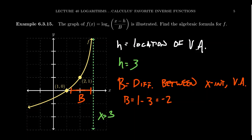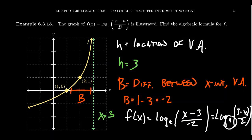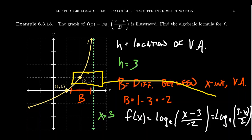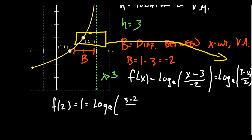So what we know about our function so far is: f of x equals log base a of (x minus 3) over negative 2. We don't know the base yet. Having a negative inside a logarithm is not actually wrong, but we can rewrite this as log base a of (3 minus x) over 2. Now we need to figure out the base a, and that's where we use the point (2, 1) that we haven't used yet.